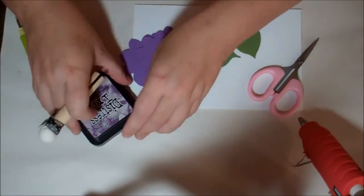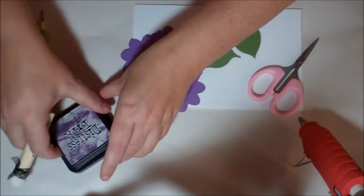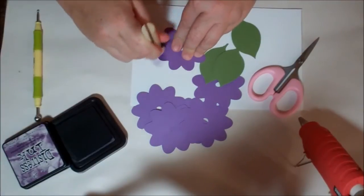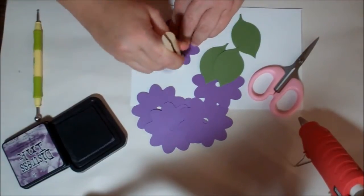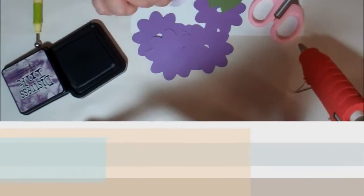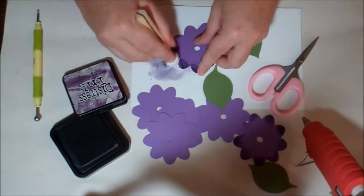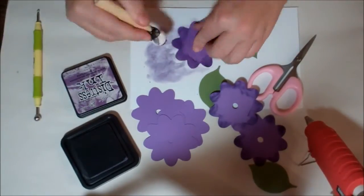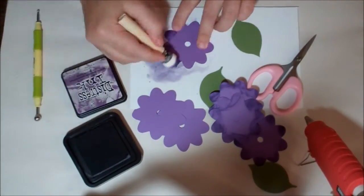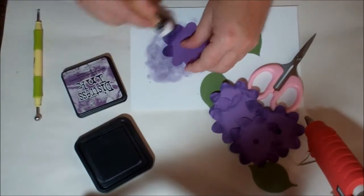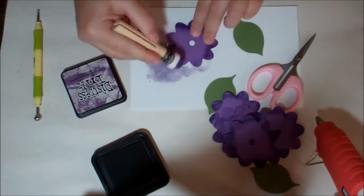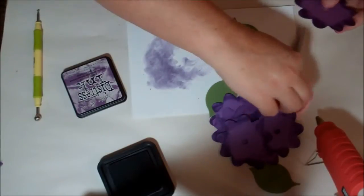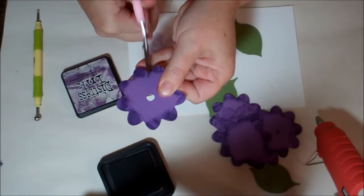The first thing that I did was I inked my petals. Then the next thing that you want to do is take your scissors and cut into each petal like this.